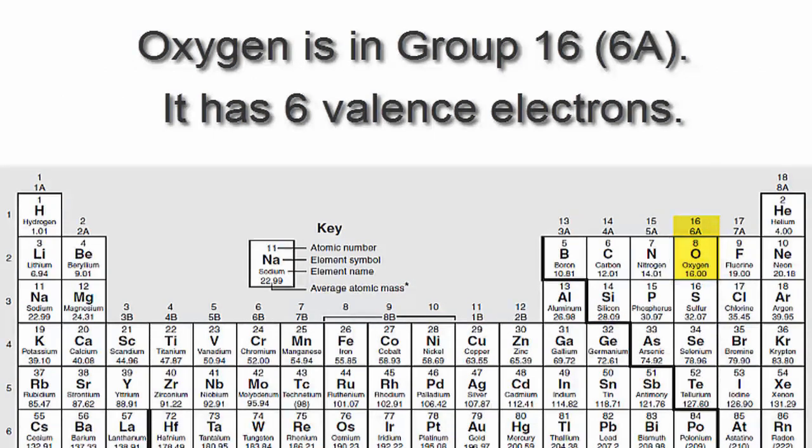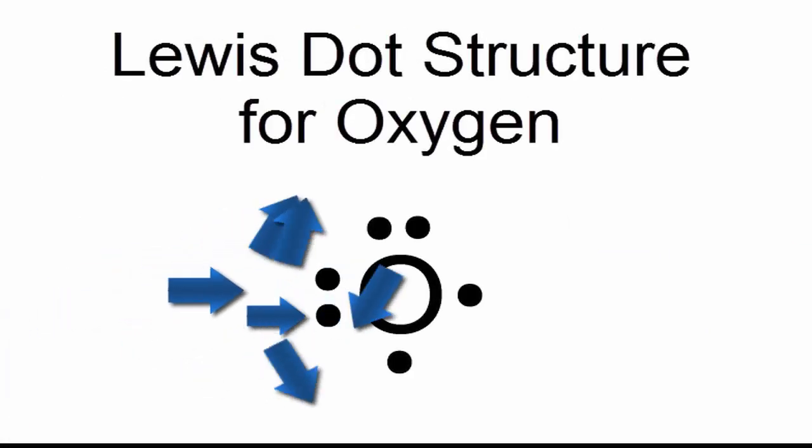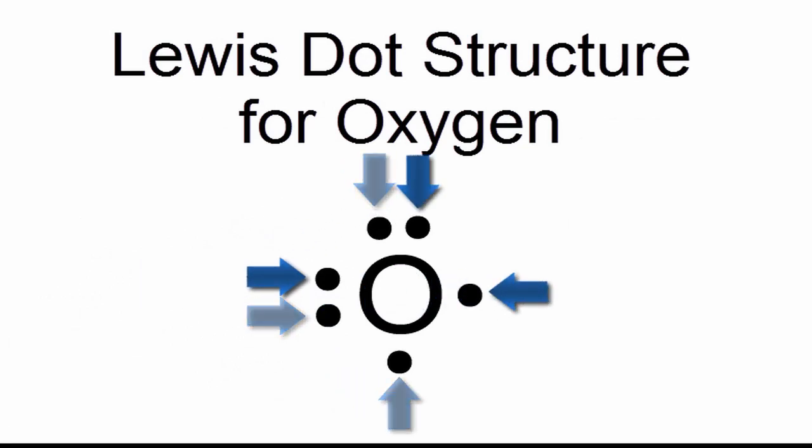We'll put the oxygen in the center of the structure with six valence electrons around it. So that's the Lewis dot structure for oxygen.